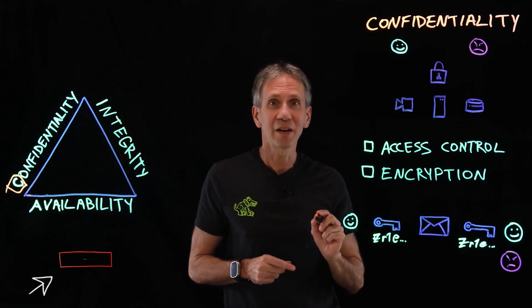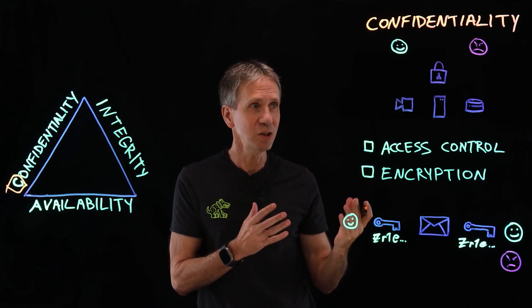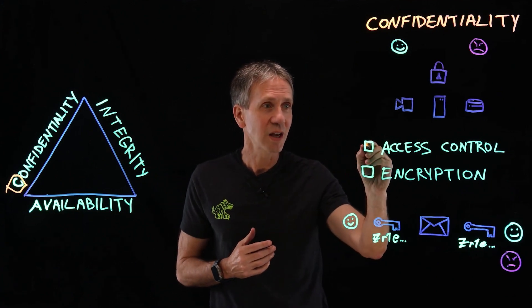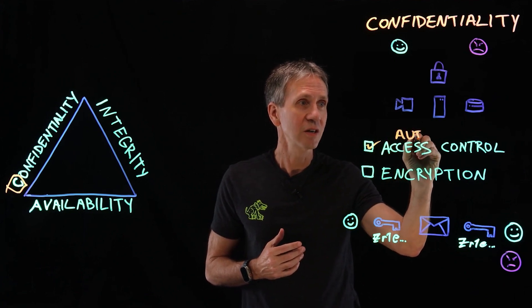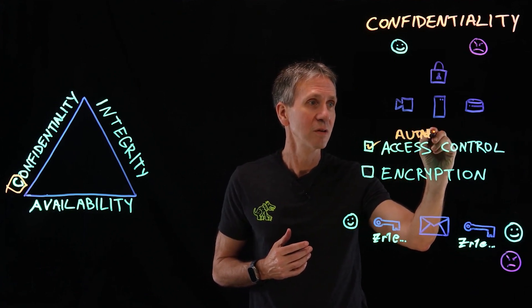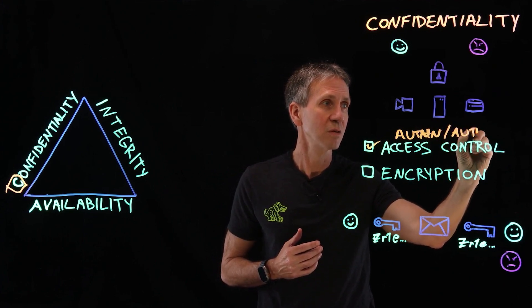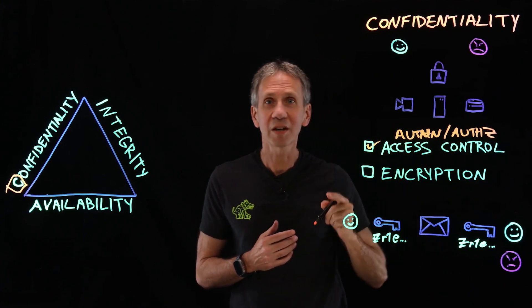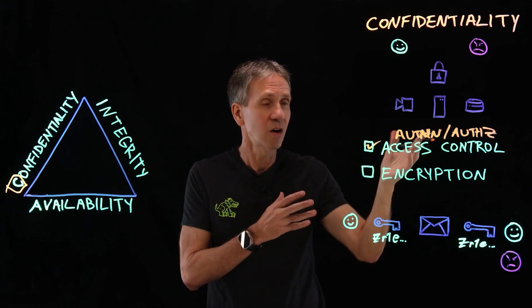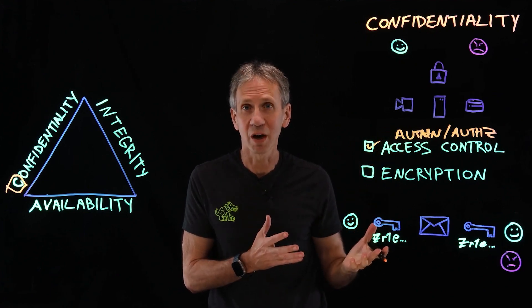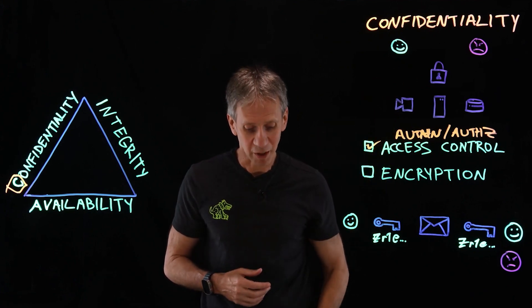Confidentiality we basically accomplish with two main types of technologies. One is access control, which consists of authentication and authorization. Authentication is answering the question, 'Who are you?' And authorization is answering, 'Are you allowed to do this or not?' Let's take an example of how this might work.